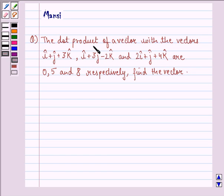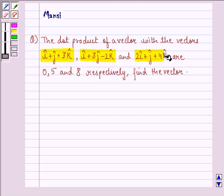The question says, the dot product of a vector with the vectors i cap plus j cap plus 3k cap, i cap plus 3j cap minus 2k cap, and 2i cap plus j cap plus 4k cap are 0, 5, and 8 respectively. Find the vector.